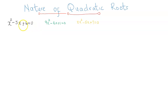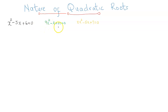Here are the three equations. The first one: x squared minus 5x plus 6 equal to 0. The second: 9x squared minus 6x plus 1 equal to 0. And the third: 2x squared minus 5x plus 7 equal to 0.